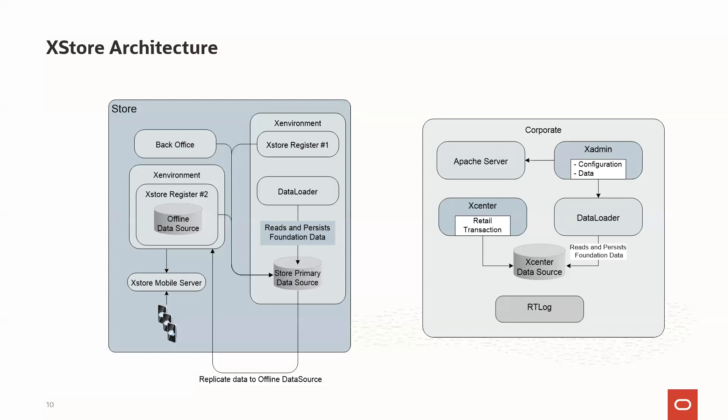At the store level, however many registers are available, that many X-Store applications will be running. For every register, there will be one X-Environment and one local database instance. However, there is one store primary data source shared and accessible by all registers. The data loader is installed on each register and loads data into the respective register. Back office functionality is also available within the Access Store application itself.